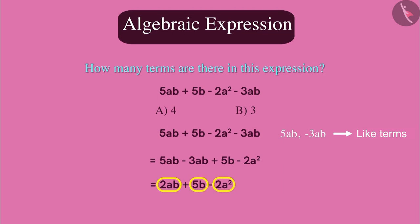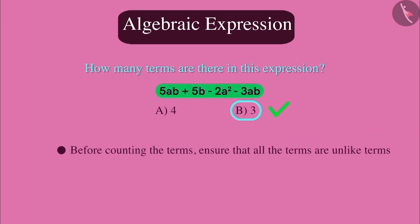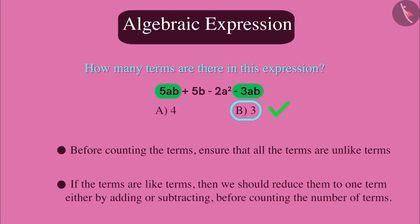Hence, the correct option is b. Remember, before counting the number of terms, we have to keep in mind that all the terms should be unlike terms. If we have like terms, then we should reduce them to one term either by adding or subtracting before counting the number of terms.